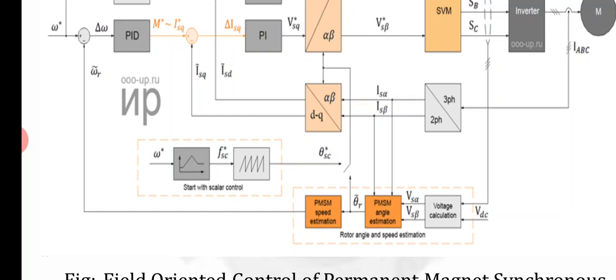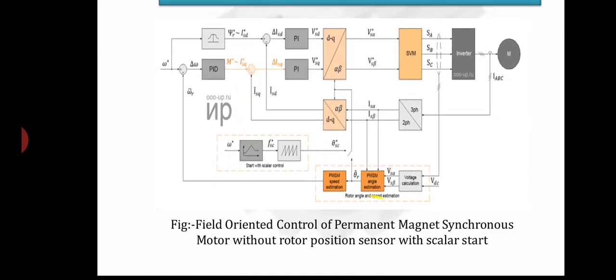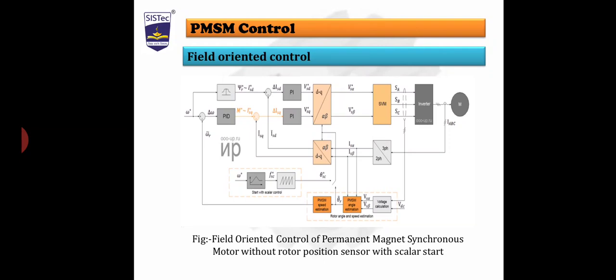...are connected in the rotor angle and speed estimation block. By using this, we can calculate the angle as well as the speed of the permanent magnet synchronous motor. In this scheme, proportional-integral-derivative controller and proportional-integral controller are used.